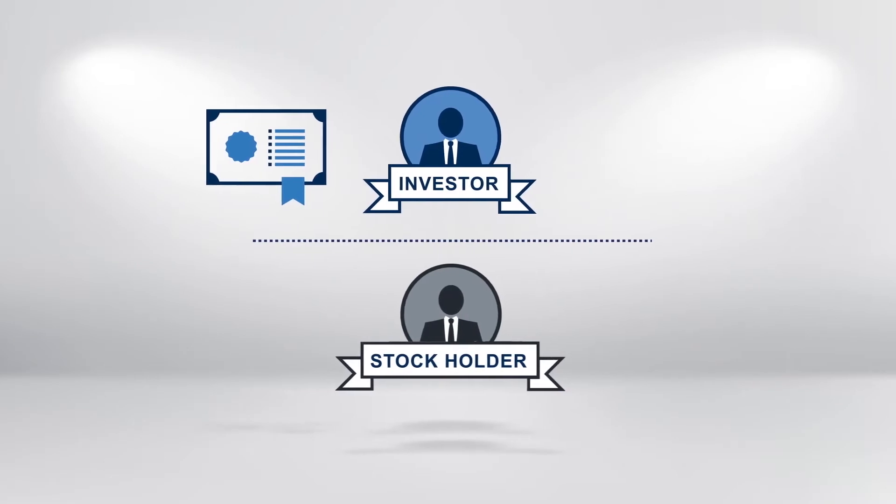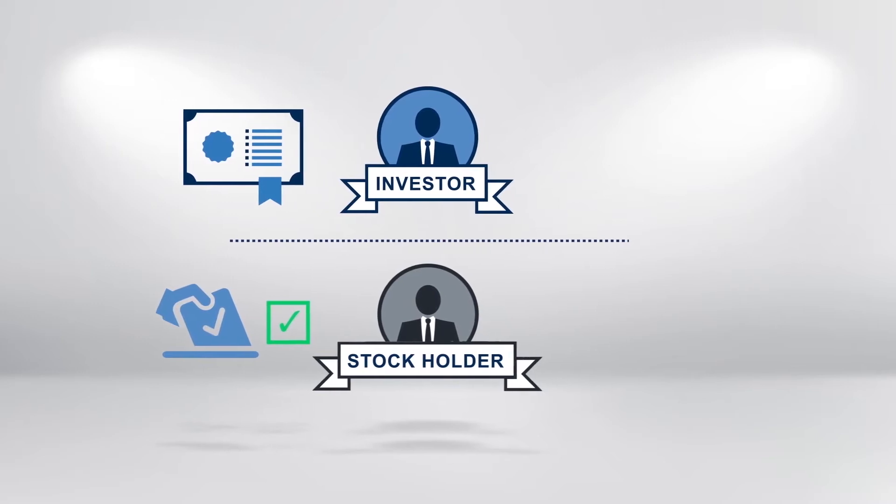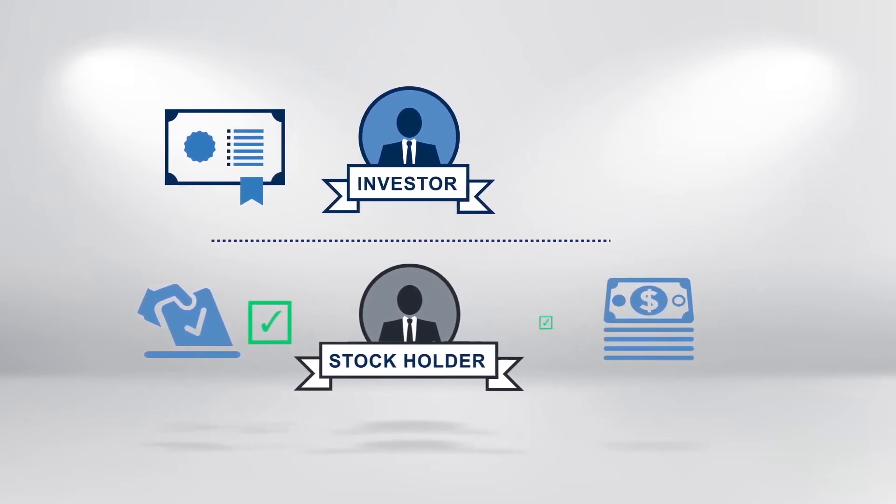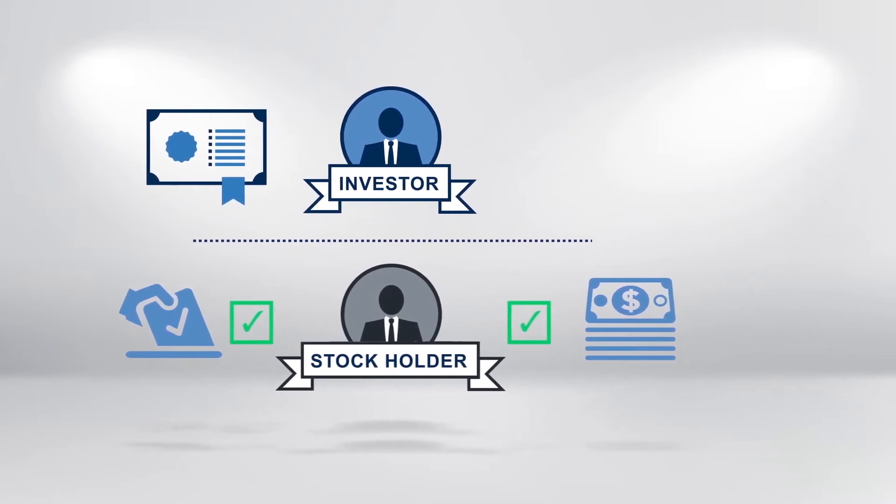Because bondholders are simply creditors to the issuer, they don't have voting rights, unlike stockholders. Neither do bondholders have the right to receive any dividends paid by the issuer to the stockholders.